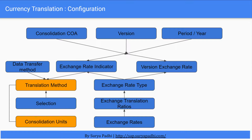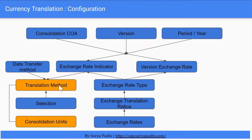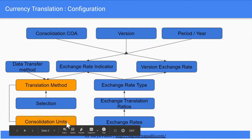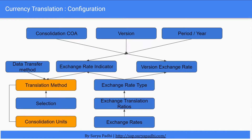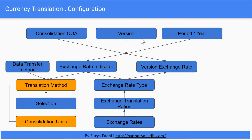Then you define a consolidation unit and assign the translation method to the consolidation units. So when you run the currency translation in either the local reporting or the group reporting monitors, based on the consolidation units, it selects what translation method to be used, what exchange rate to be used, and for which period and version and consolidation chart of accounts.